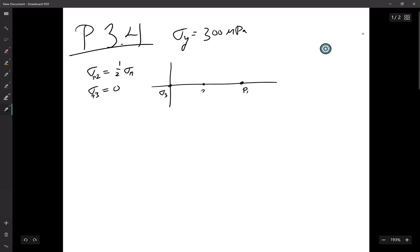oh, let me change my notation here, sigma 2 and sigma 1. Great. So those are our principal stresses. That means that we have Mohr circles that look something like this.